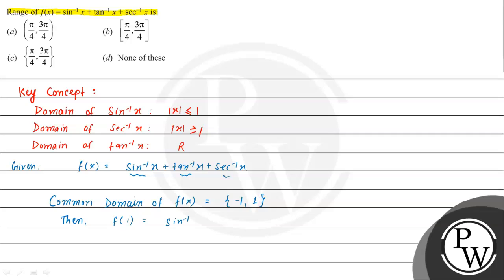Then to find f(1): sin inverse 1 plus tan inverse 1 plus sec inverse 1. The value of sec inverse 1 is 0. Solving this, we get 3π/4.